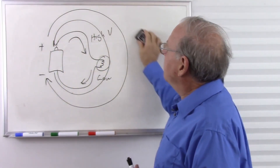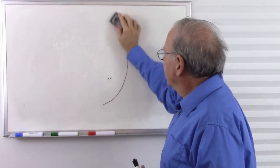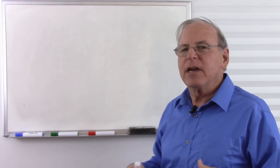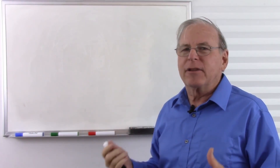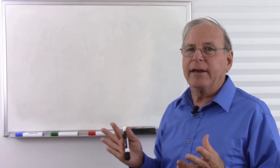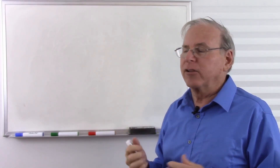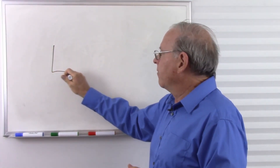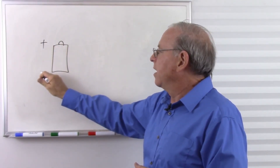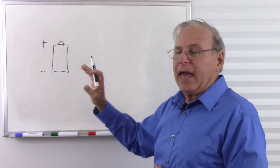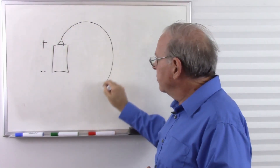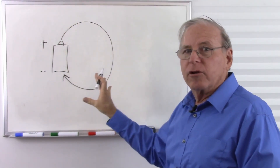Well, it turns out that most of the electronics world pretends that electricity goes from positive to negative. There are still some camps that insist on negative to positive, but they are becoming fewer and fewer. So in academia and the electronics industry, we take our battery — or whatever else is producing our voltage — and we have positive, we have negative, and even though we know it's backwards, we say that the electricity goes from positive to negative through our circuit.